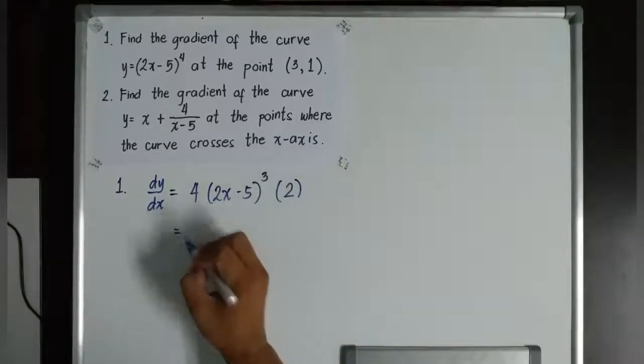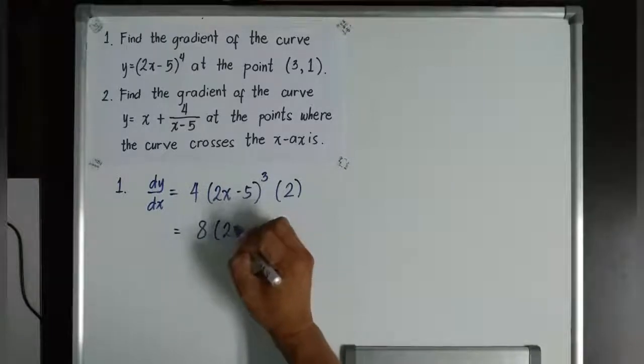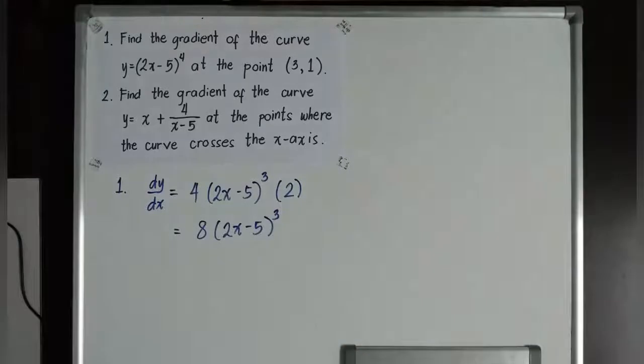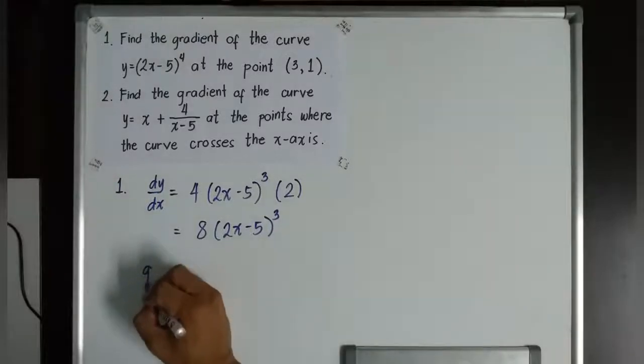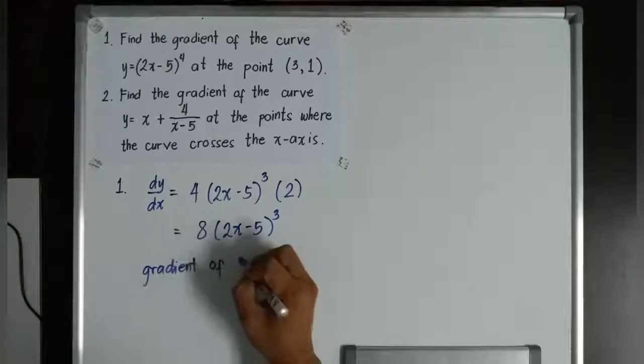So, therefore, dy over dx is equal to 8 times the quantity 2x minus 5 to the power of 3. Thus, since we are looking for the gradient, remember, dy over dx is always the gradient of the tangent at a certain point.